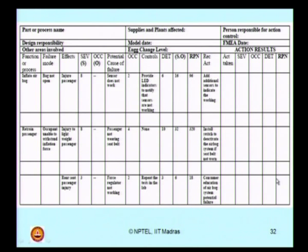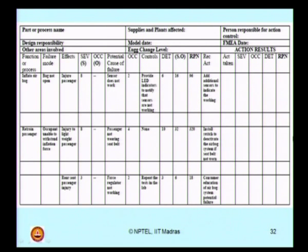This is for your exercise. You recommend certain actions; after the actions are implemented in the design, see what is the level of reduction in severity, what is the level of improvement in the detection, then what becomes your RPN. This is a very simple format of doing an FMEA analysis for an airbag system, which is one of the mechanical systems for which an FMEA can be readily applied.